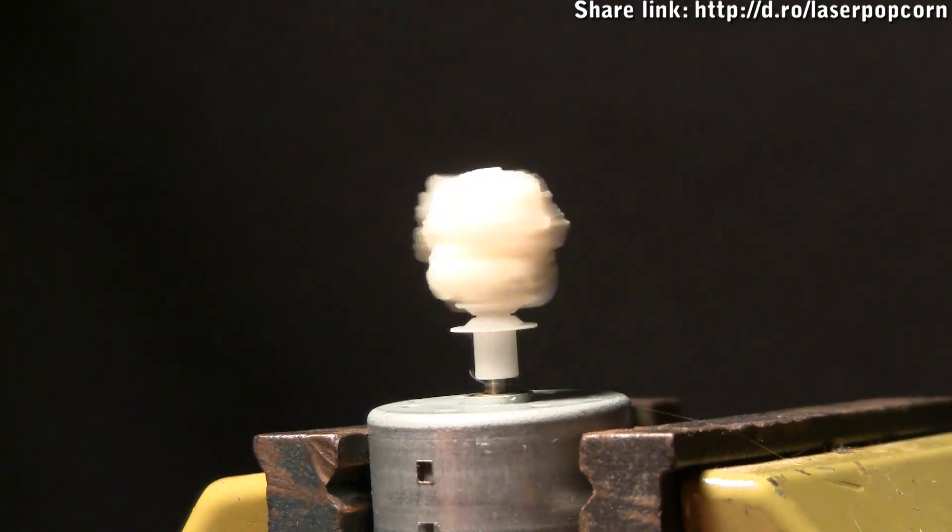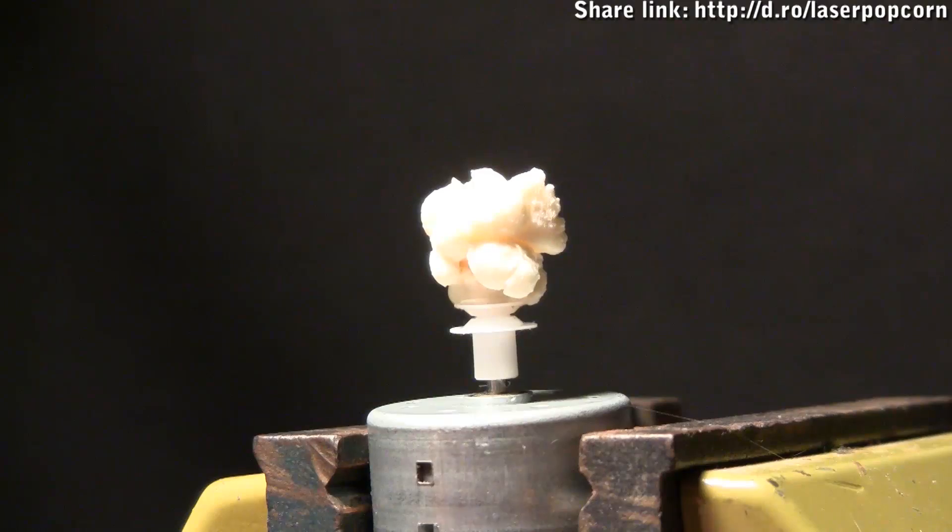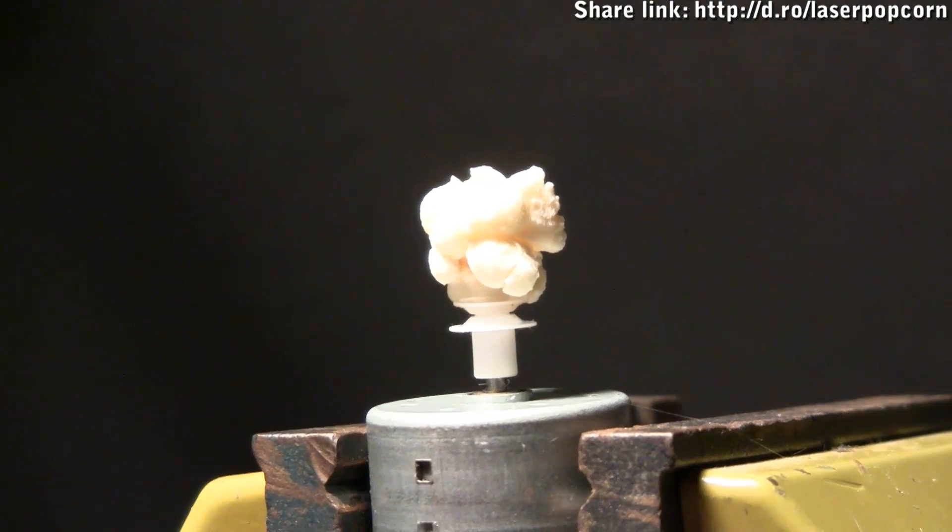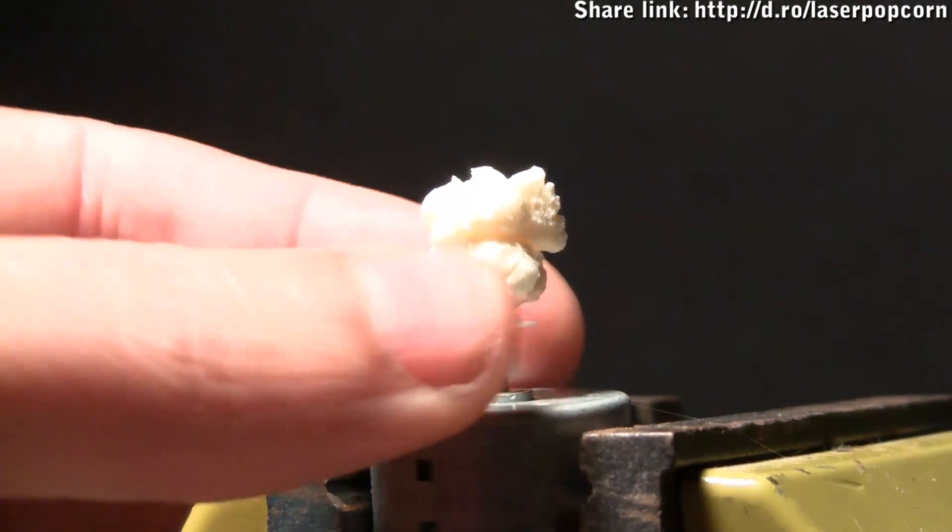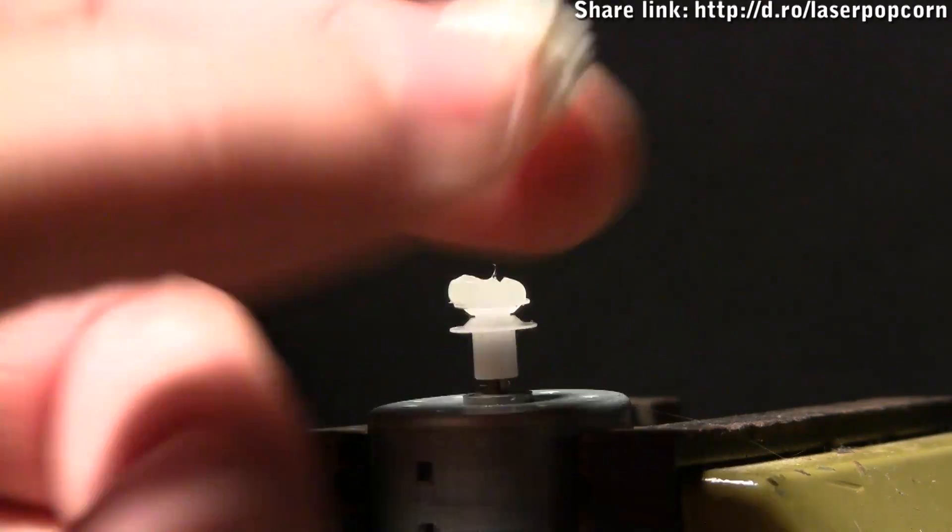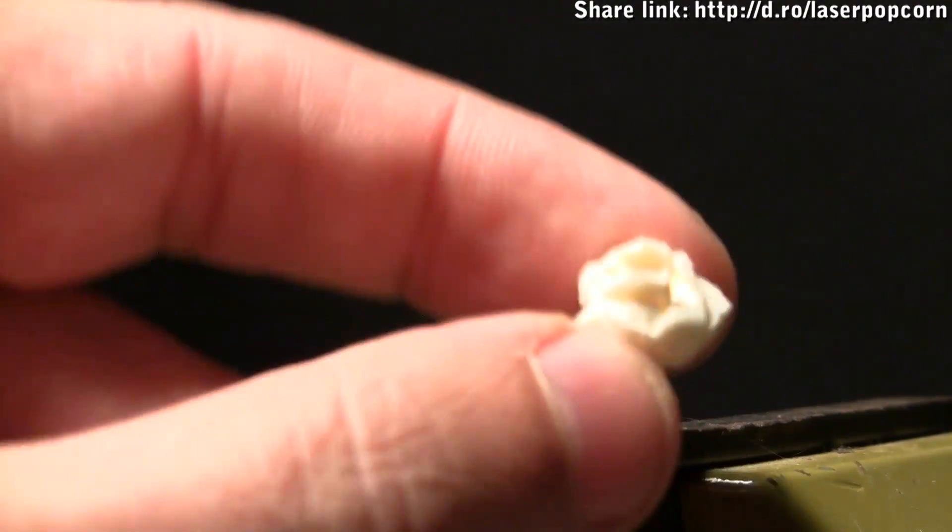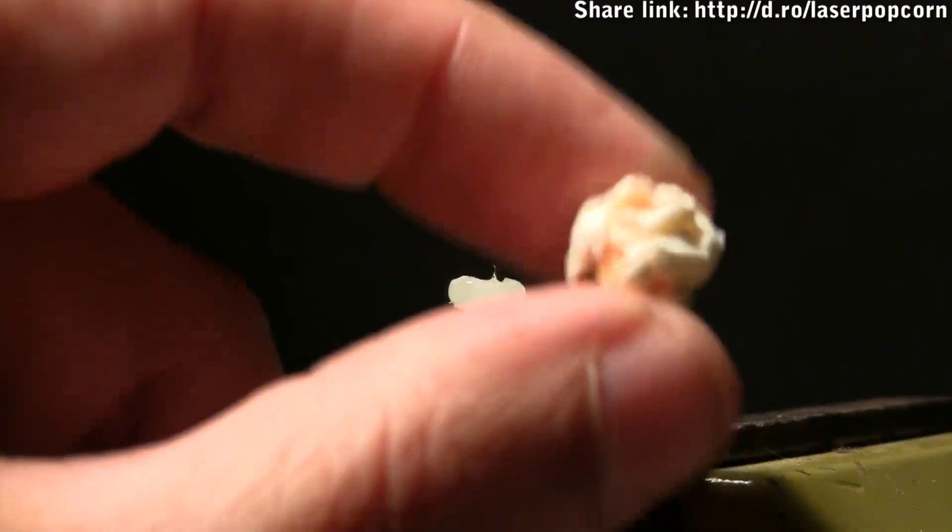Let me turn off the motor here, and there it is. Now, it is attached by the hot melt glue, but I can remove it so that we can examine it a bit closer and see that, yes, we have popped a kernel of corn with lasers on a home workbench.